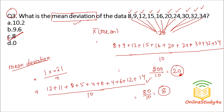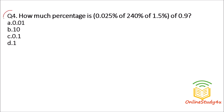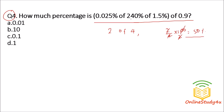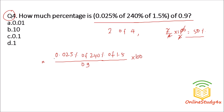Friends, use the calculator — that is the opportunity you have. Question number 4: how much percentage is 0.025% of 240% of 1.5 divided by 0.9? In a simple way, just as 2 divided by 4 into 100 gives 50%, we will do the same. We need to solve 0.025 percentage of 240 percentage of 1.5 divided by 0.9 into 100.